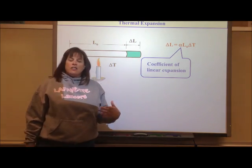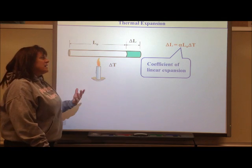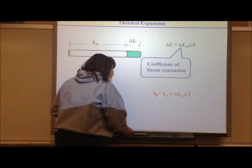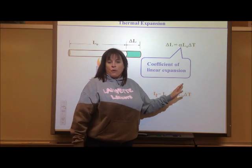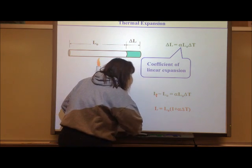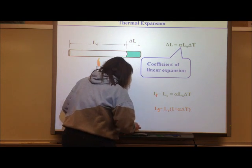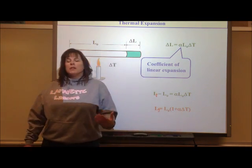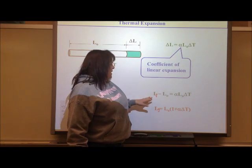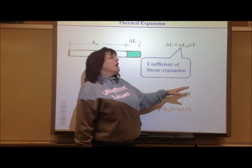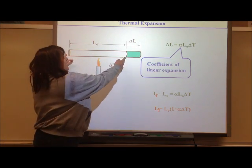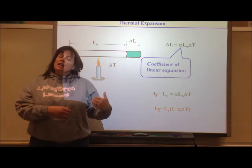If you want the final length, since delta L is final minus initial, you can rearrange the equation so that L final equals the initial length times the quantity (1 + alpha × delta T). This is the equation to remember. You can rearrange it to find delta L, and then add that to your original length if heating, or subtract it if cooling.